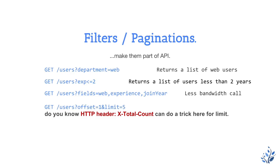For example, we can fetch users from the web department filtered by experience and join date, listing only those three specific fields instead of everything else. Pagination can also be part of the same API, including offset parameters.